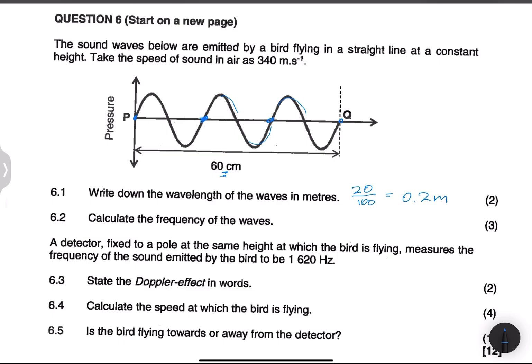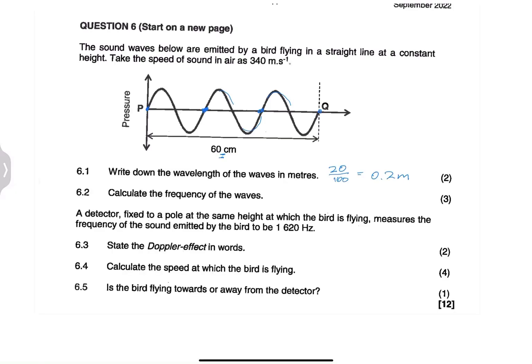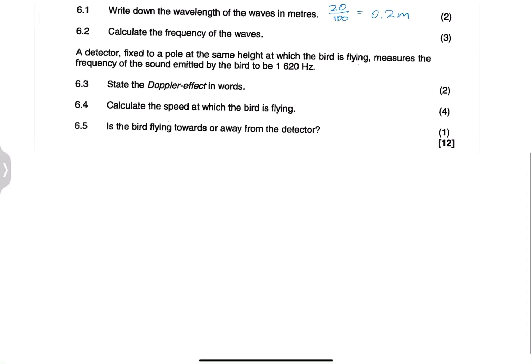So they say to us, calculate the frequency of the waves. Now please, I want you to keep in mind when we talk about the frequency, we're looking at question 6.2. When we talk about frequency, we know that frequency is actually V, not C this time, because we are talking about the Doppler effect and not speed of light. So that's V divided by lambda, which is the wavelength.